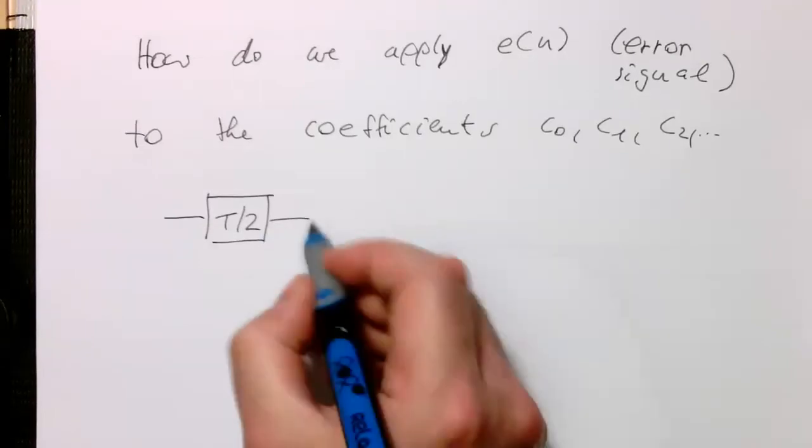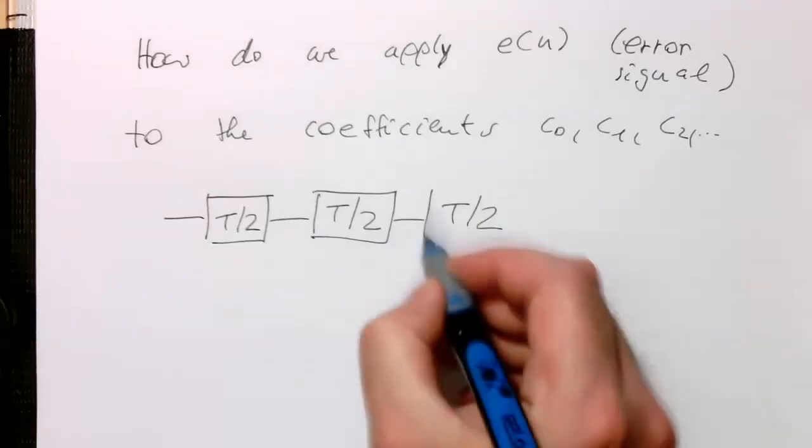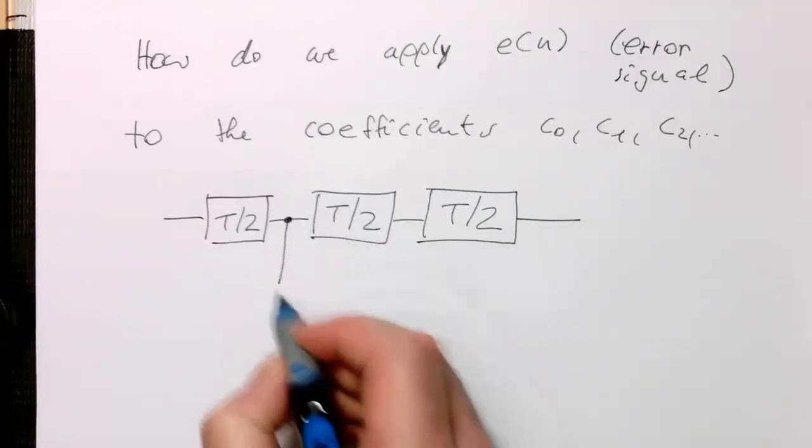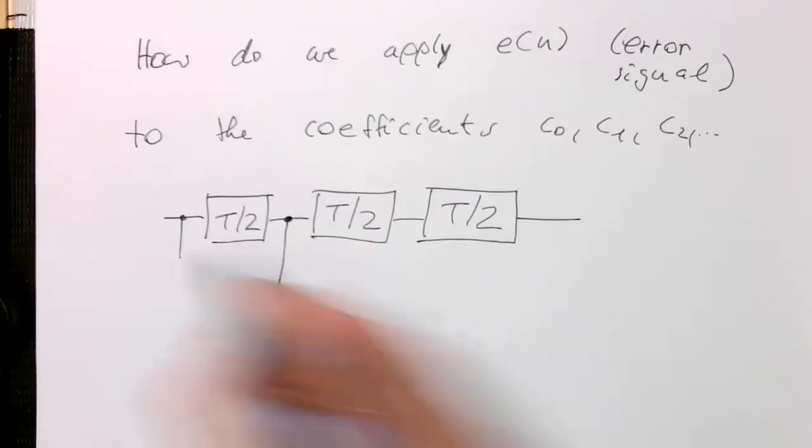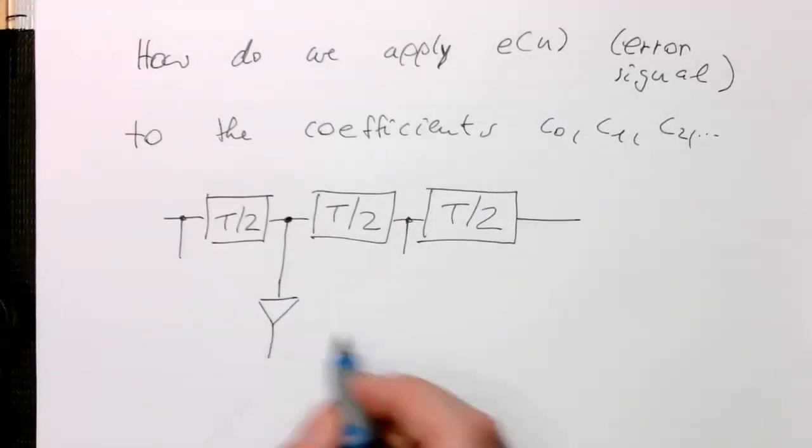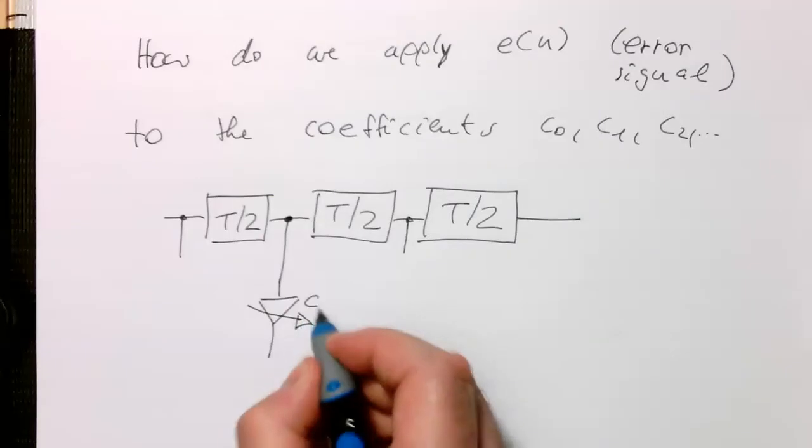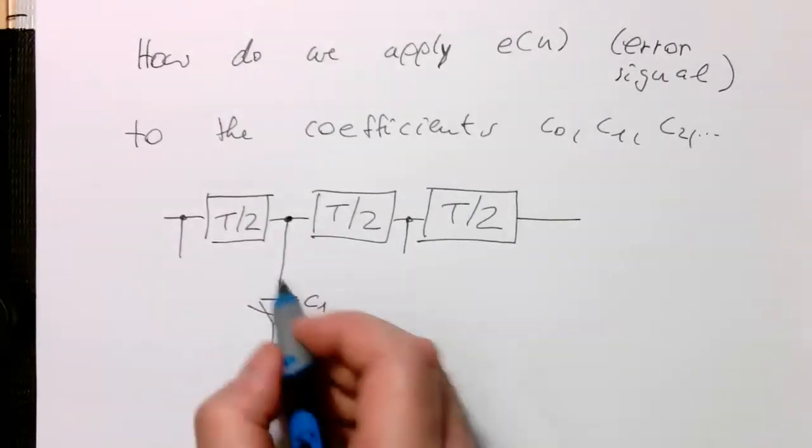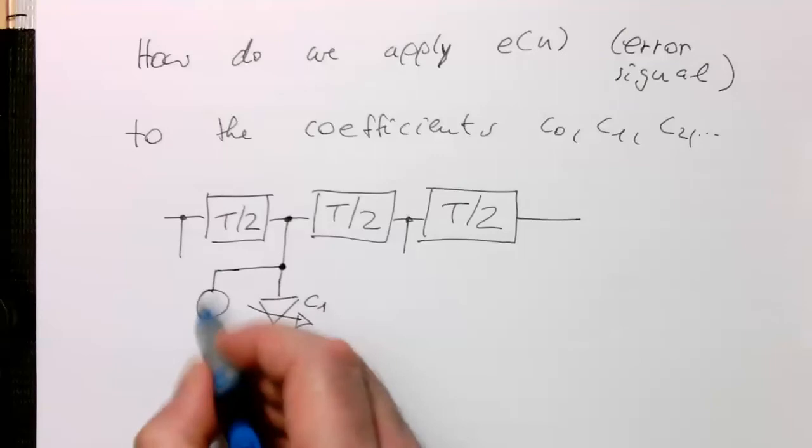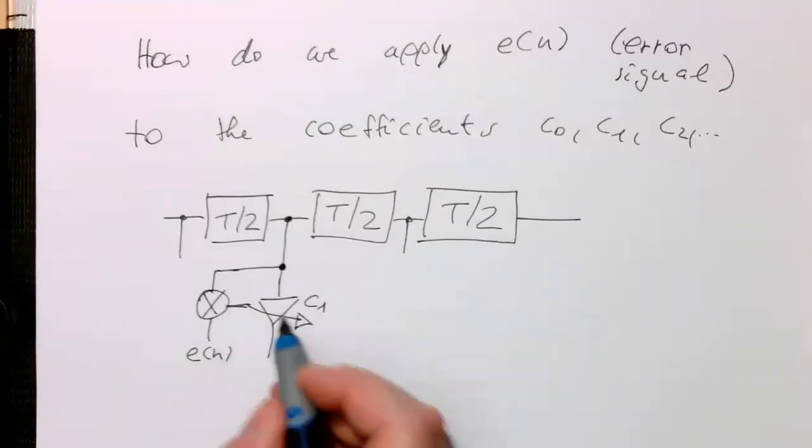So we've got our FIR filter circuit here. And let's just look here at this coefficient C1. So we've also got opposite coefficients here and here. Let's just look at one of them. And let's just draw this C1 here as a variable amplifier. So that's here our C1. And the idea is that we take the input signal here and so we multiply that with our error E of N. And with that we are tuning this weight here.